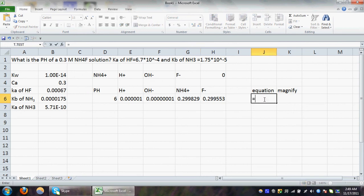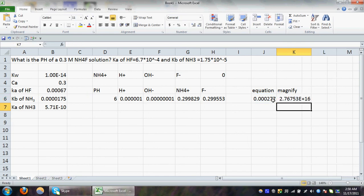Then we need to write the equation, which is H+ plus our NH4+ minus our OH- minus our F-. Hit enter, we get our equation, and we need to magnify our equation. To do so, I will multiply it with a big number, let's say 10 to the power of 20. Hit enter, our equation is magnified.